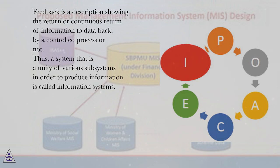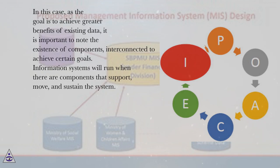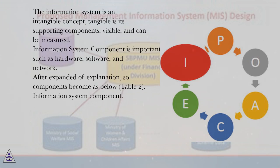Thus, a system that is a unity of various subsystems in order to produce information is called an information system. As the goal is to achieve greater benefits of existing data, it is important to note the existence of components interconnected to achieve certain goals. Information systems will run when there are components that support, move, and sustain the system. The information system is an intangible concept; tangible are its supporting components, which are visible and can be measured. Information system components include important elements such as hardware, software, and network, with a full breakdown provided in table 2.